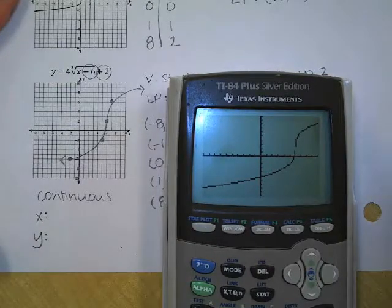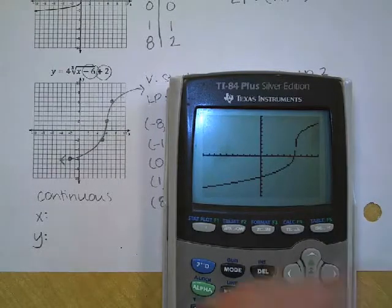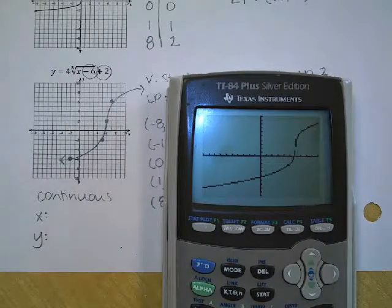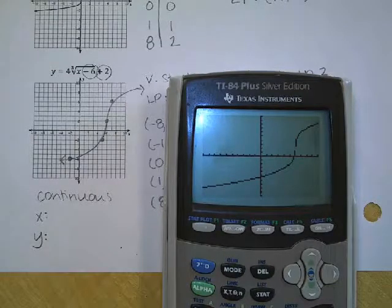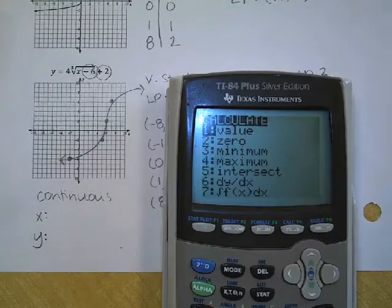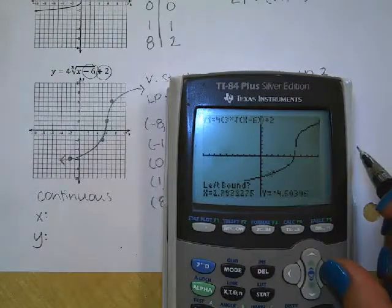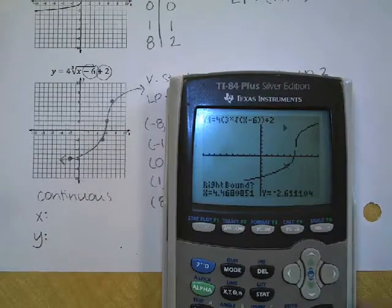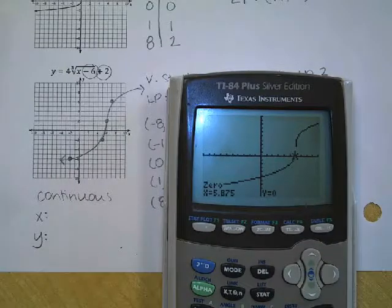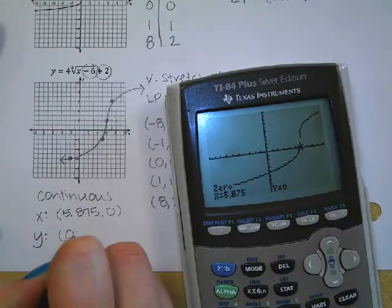So let's go ahead and look for the X intercept. How do we do that? So we're going to do second trace. Which one? Two. And we're going to do left bound and right bound. So there's definitely to the left of my point. So I'm going to press enter, and I'll go to the right of my point, and press enter. And so my X intercept is 5.875.